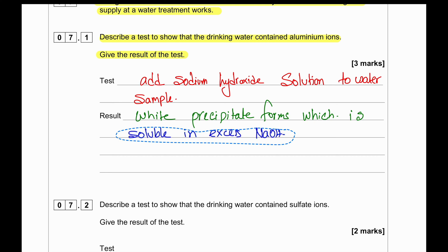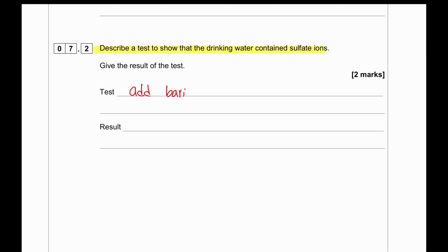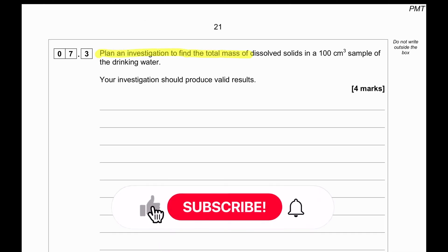Describe a test to show the drinking water contained sulfate ions. To test for the presence of sulfate ions, there is a classic test: add barium chloride solution and along with barium chloride solution also add dilute hydrochloric acid to the water sample. If there is any sulfate ion present, it will form a white precipitate.